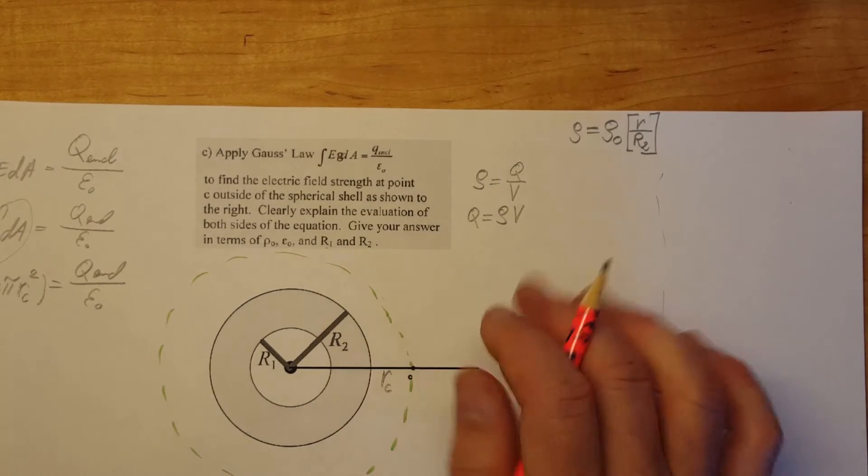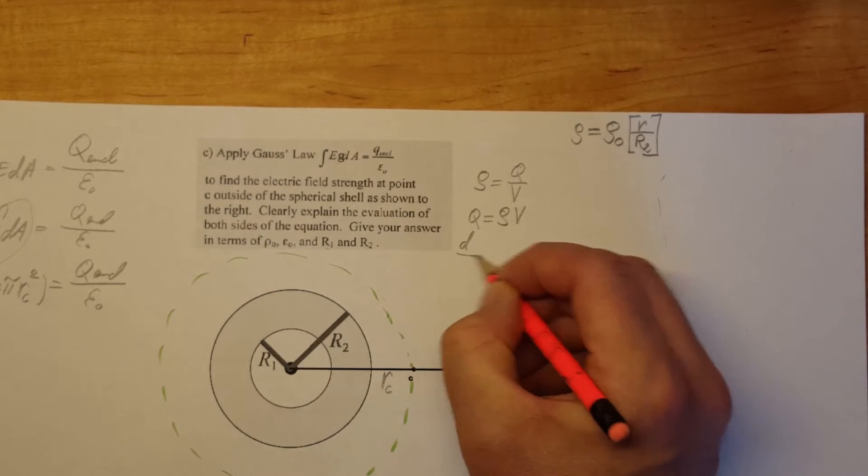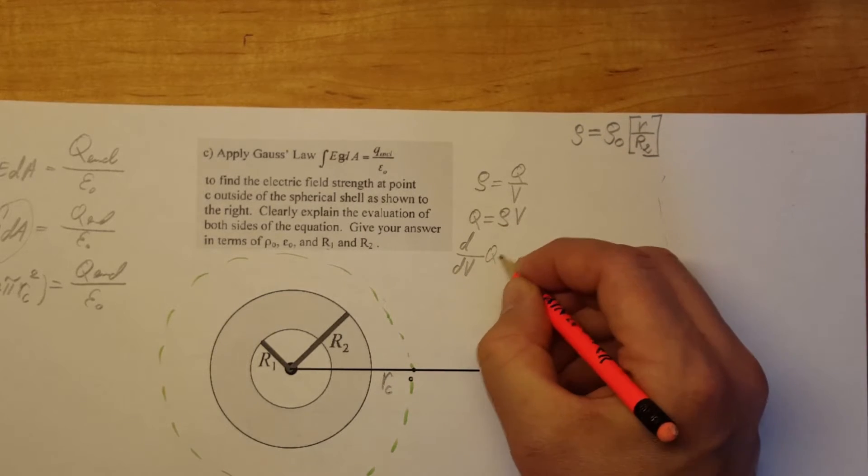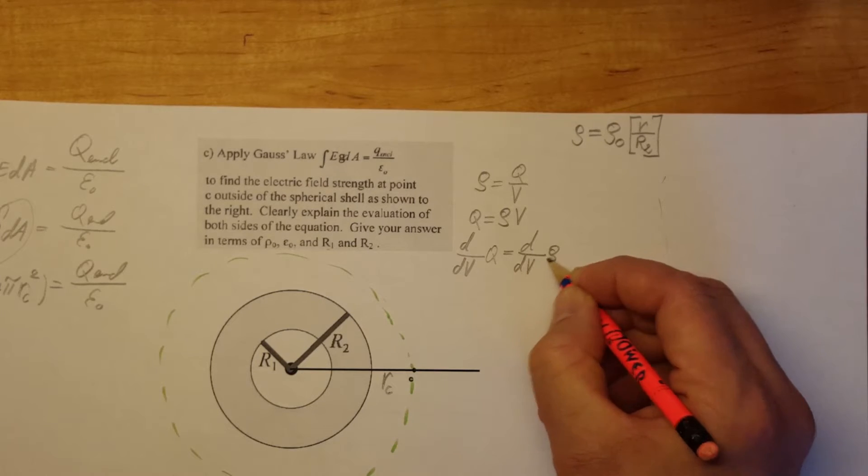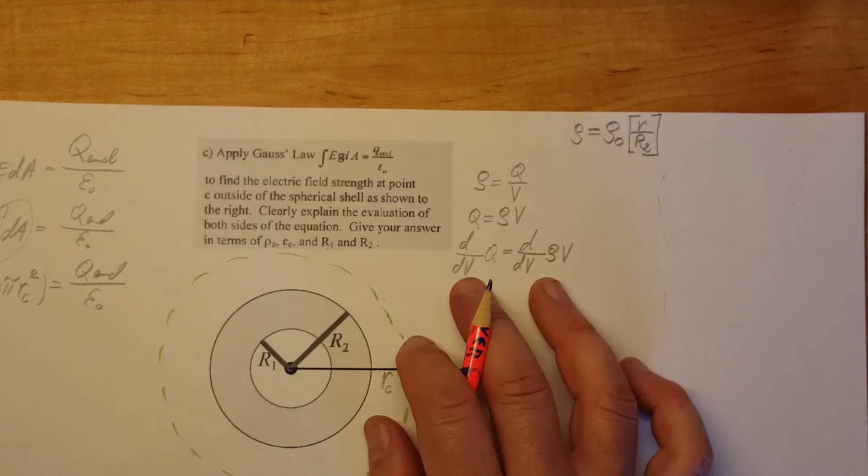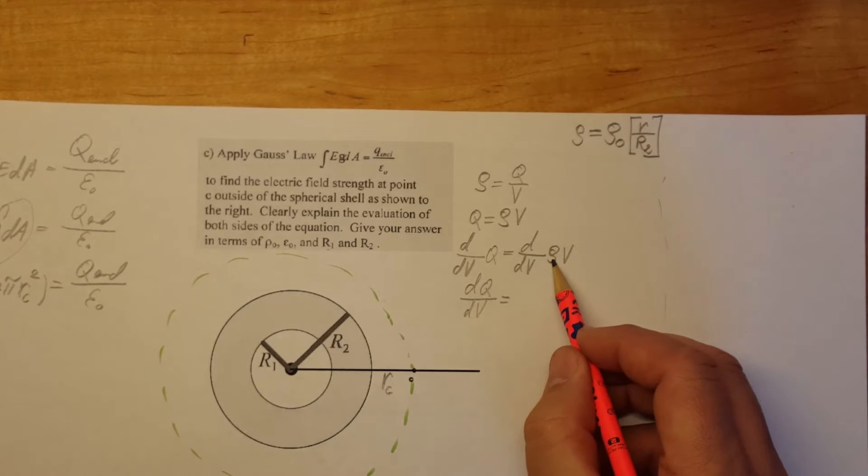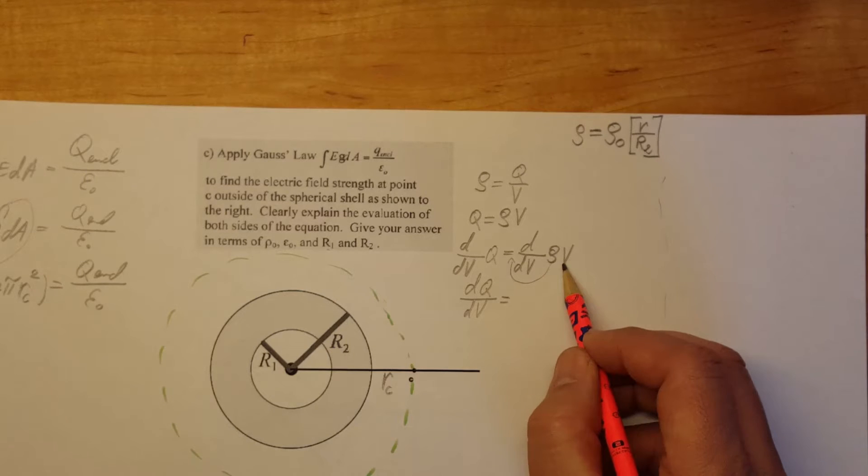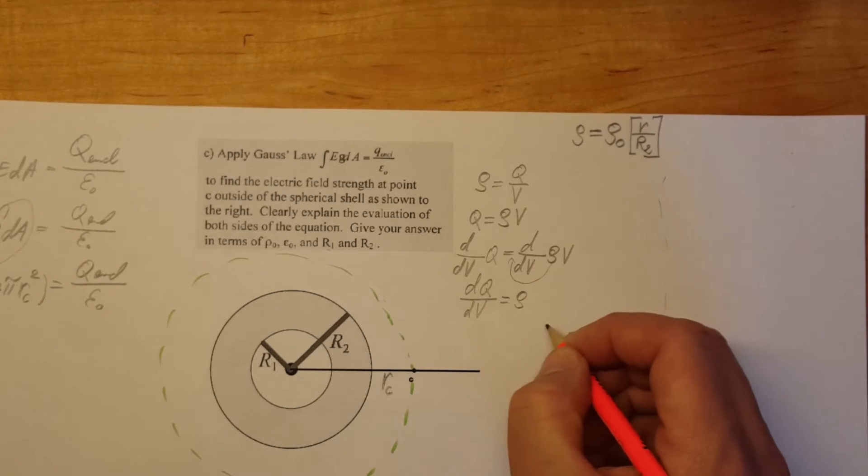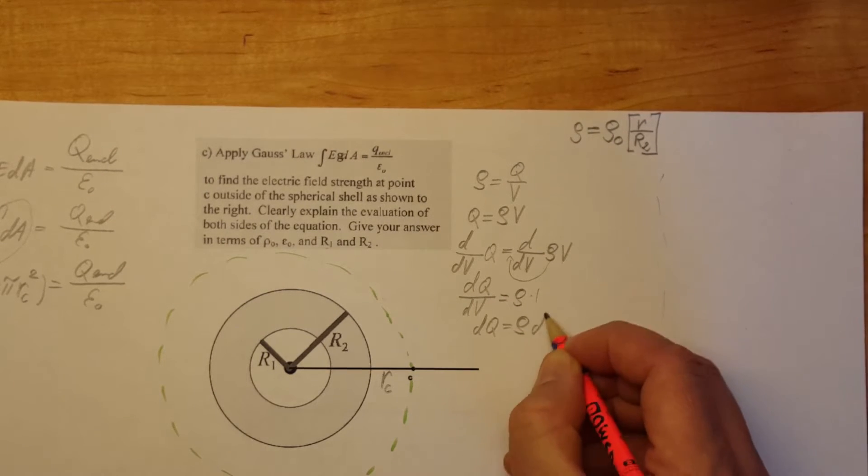Now we're going to take derivative of both sides with respect to V. So d with respect to V of Q and derivative with respect to V of Rho V. And from here we can dQ over dV equals our Rho is constant so we can move it in front of our derivative and the derivative of V with respect to V is just 1. So Rho times 1 and we have dQ equals Rho dV.